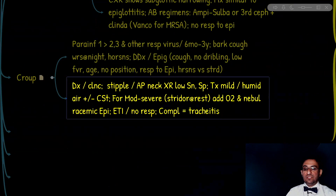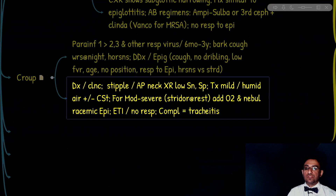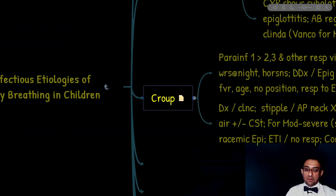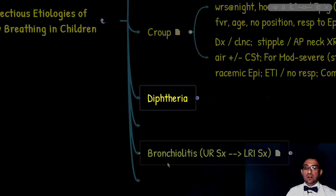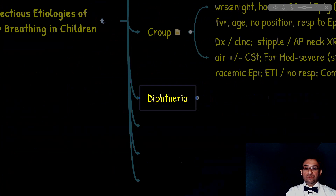A possible complication of croup is tracheitis, which we just discussed. We now move to our final differential of subglottic stenosis due to infectious etiology, and that is diphtheria.